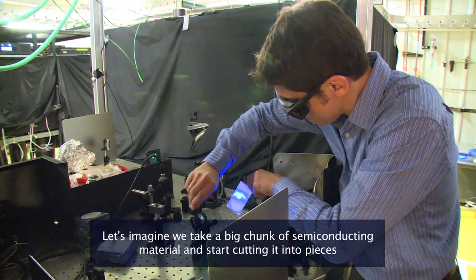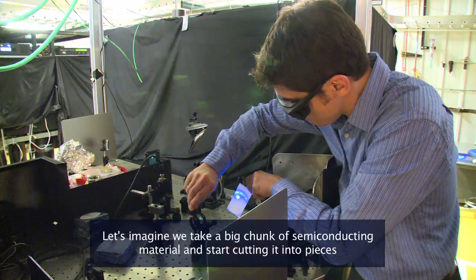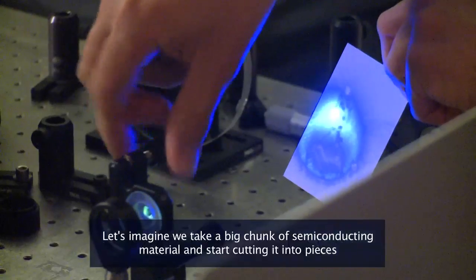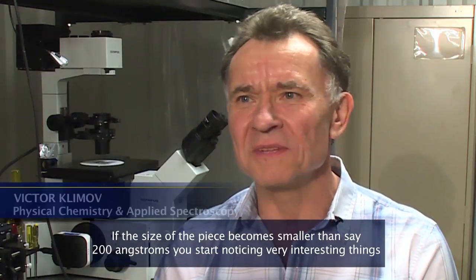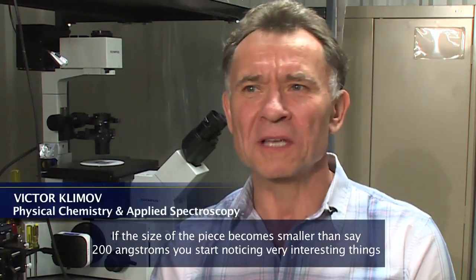Let's imagine we take a big chunk of semiconductor material and start cutting it in pieces. If the size of the piece becomes smaller, say 200 angstroms, you start noticing very interesting things.